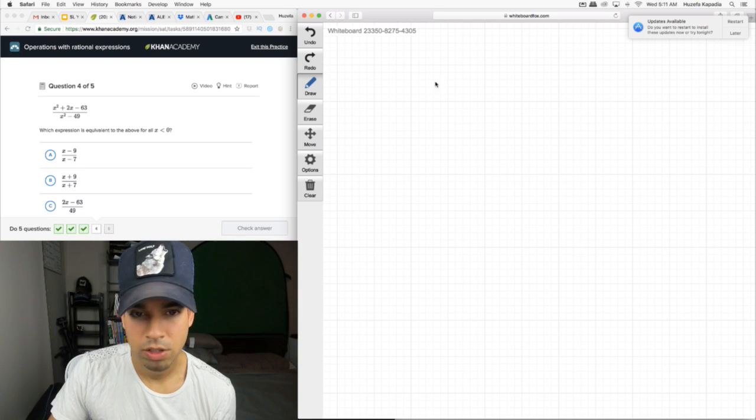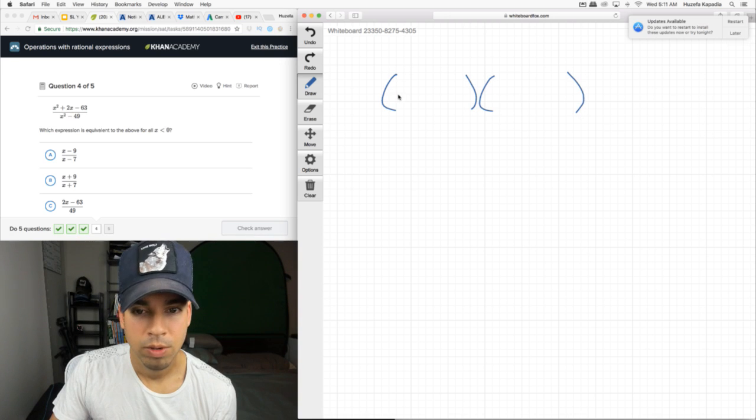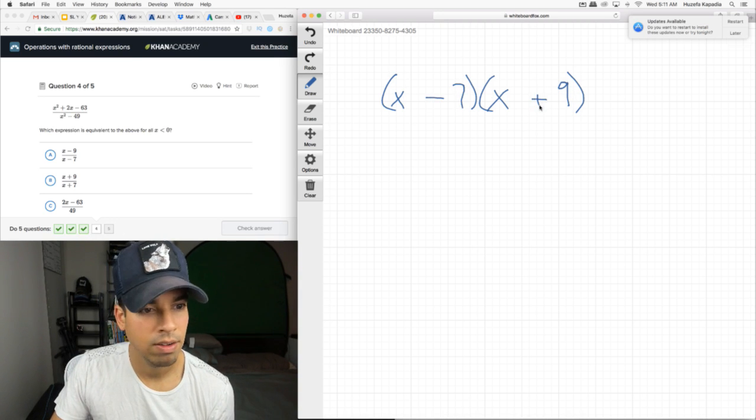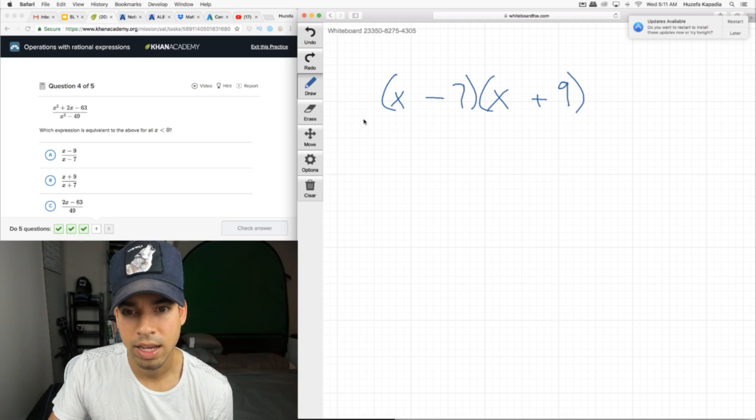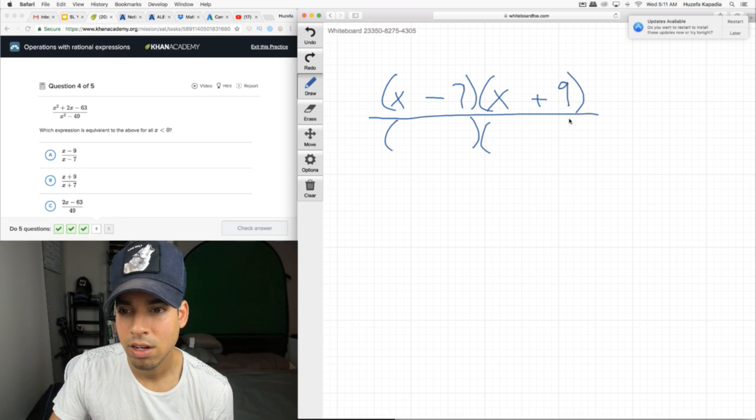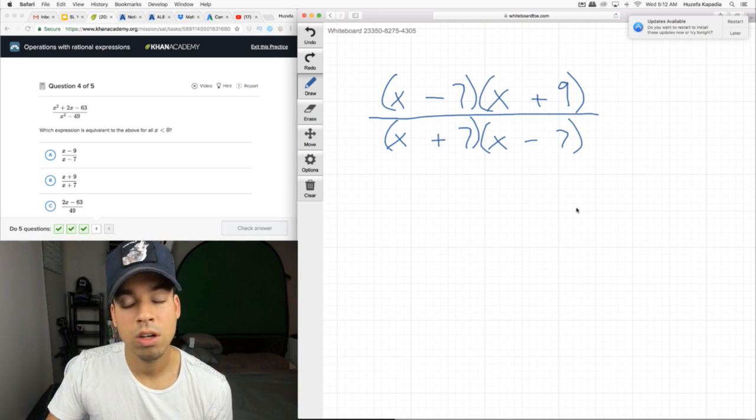Two questions left. All right. Now, same thing. To reduce this, we need to factor. So, I'm going to straight away factor that top part. We got an X. We got an X. What multiplies the negative 63 adds to positive 2? That's a positive 9 and a negative 7. Negative 7. Negative 63 adds to 2. Boom. And, the bottom, difference of squares, like I just said. So, we take the square root of the first, X. Square root of the second, 7. And, 1 is plus. 1 is minus.